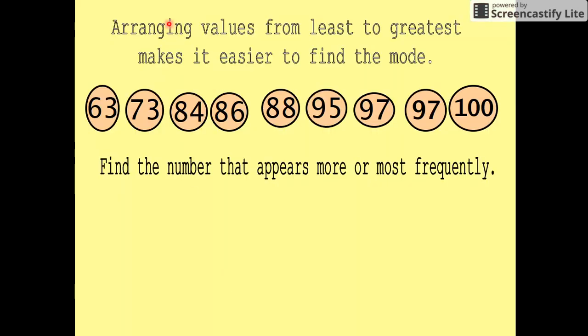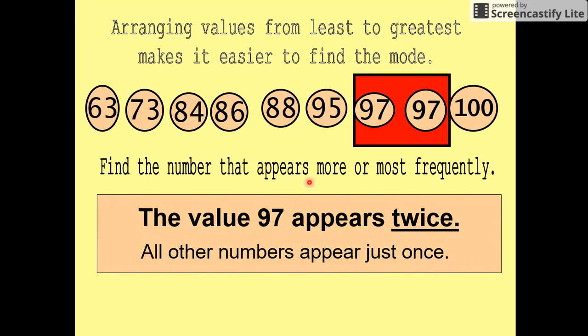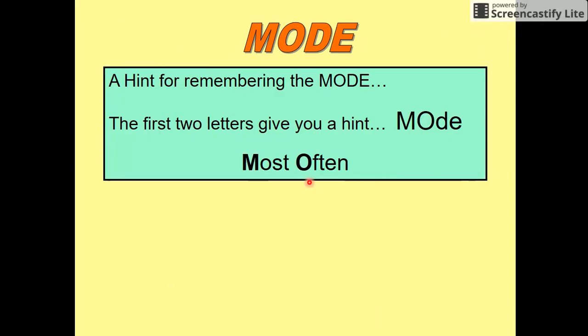Arranging values from least to greatest makes it easier to find the mode. So you put that into least to greatest: 63, 73, 84, 86, 88, 95, 97, 97, 100. What appears the most? 97 does. The value of 97 appears twice; all the other numbers just appear once. Therefore, 97 is the mode because it appears the most. A hint for remembering the mode: the first two letters give your hint—mode, most often.